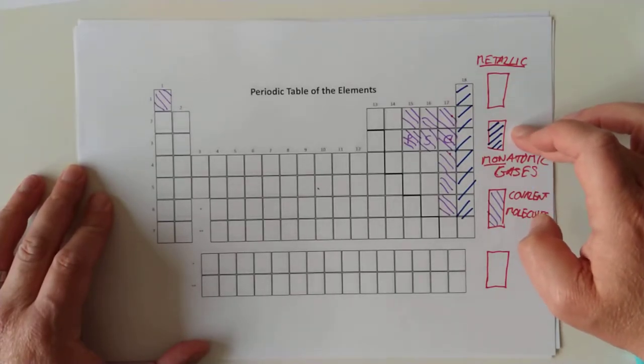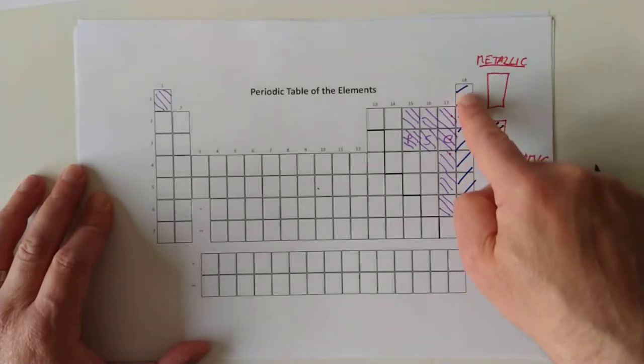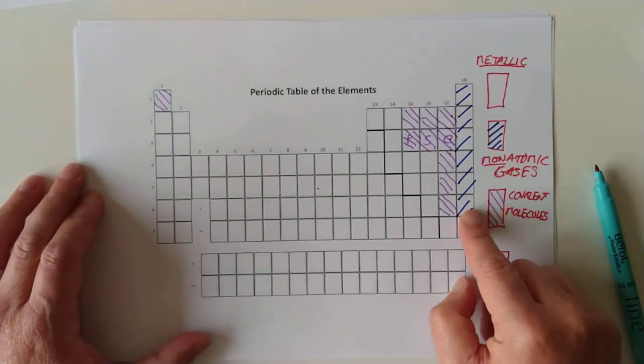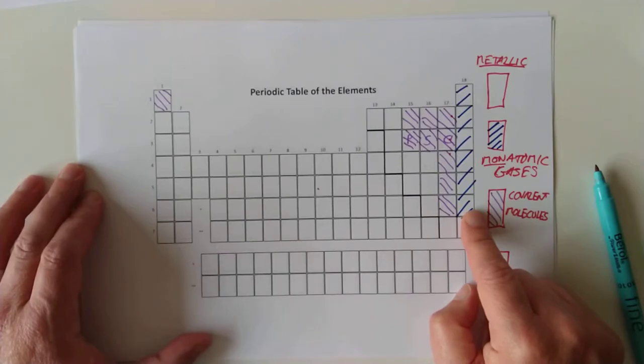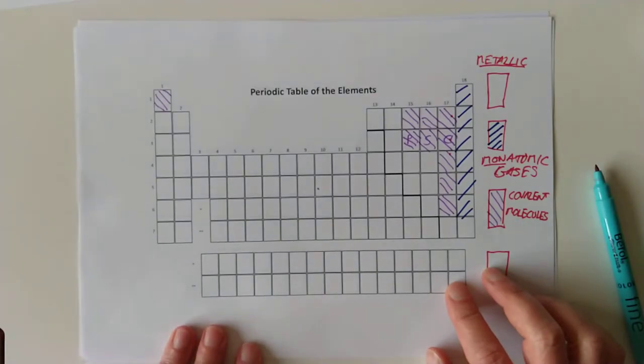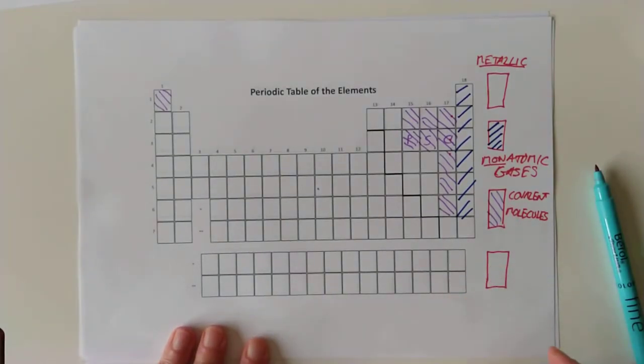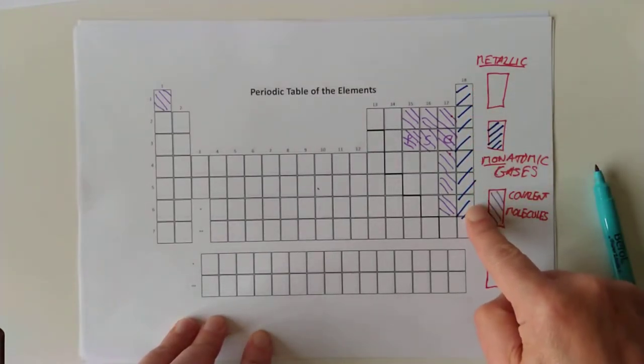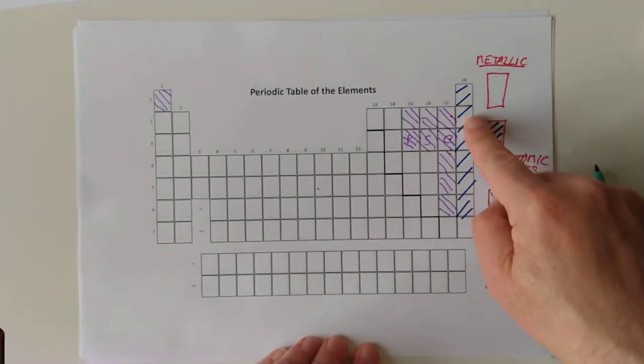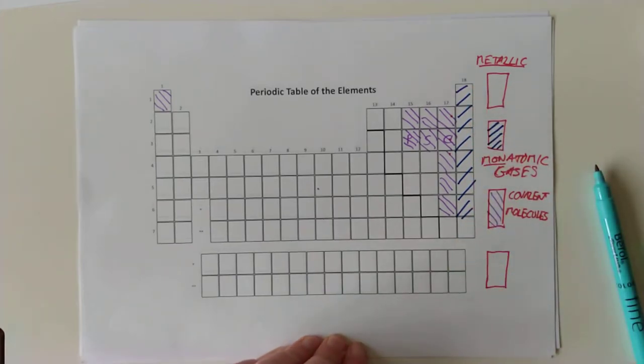We covered the fact that group 8, group 0 gases, they do in fact have melting and boiling points. Therefore, there must be some new and unknown force sticking them together. It's not very strong because the melting and boiling points are extremely low. We explained that these were called London dispersion forces, caused by temporary uneven distribution of electrons, causing the molecules to have a slightly positive, slightly negative end. That's why it's so weak. That was last time.